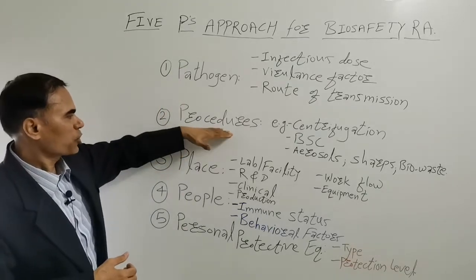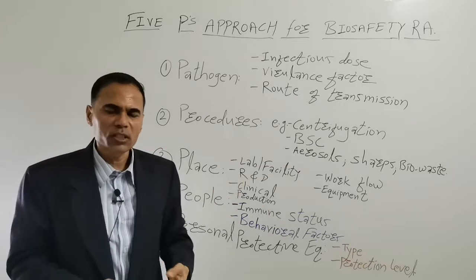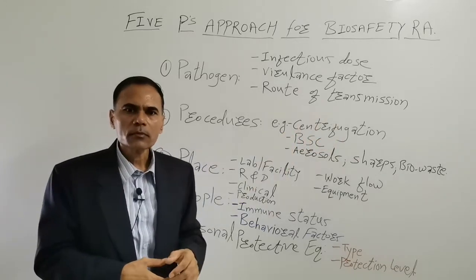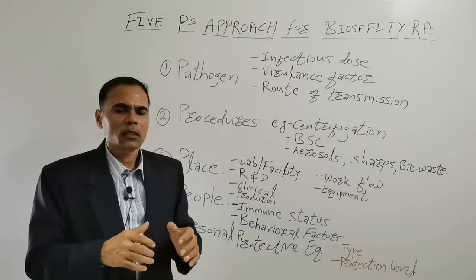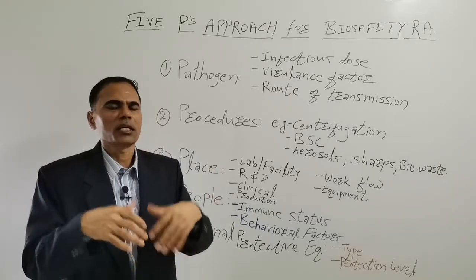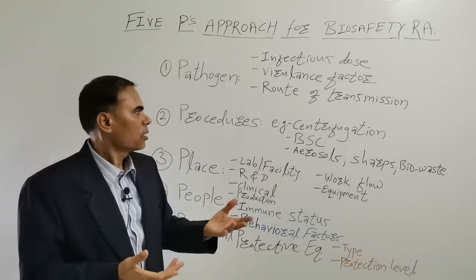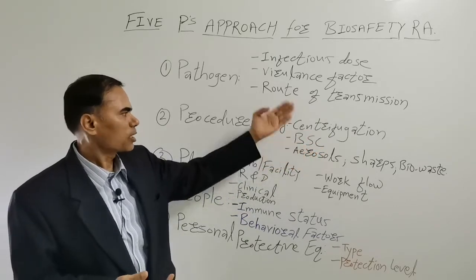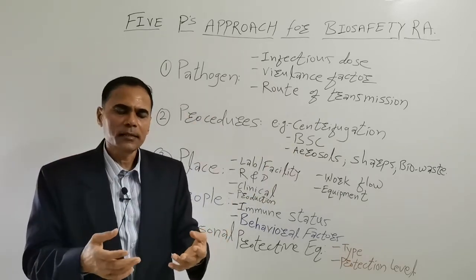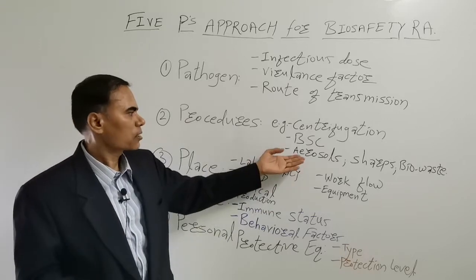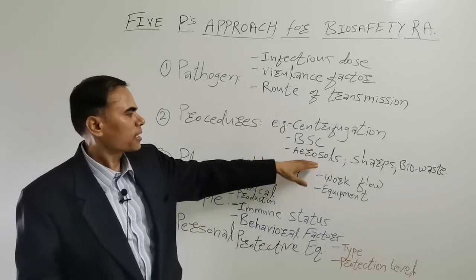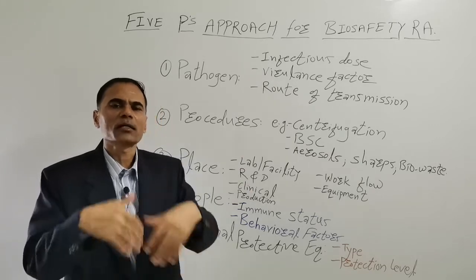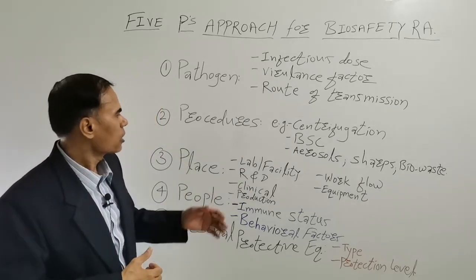The second P stands for Procedures. There are a number of procedures in your research and development activities. For example, you need to consider centrifugation, because when you are using centrifugation there is a possibility something unpleasant can happen. You need to consider whether aerosols are generated and what mitigation measures you need to take, what types of sharps are present in the procedure, as well as what type of biological waste is generated and how you are disposing of that biological waste.